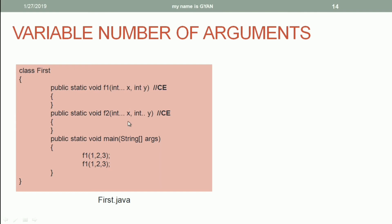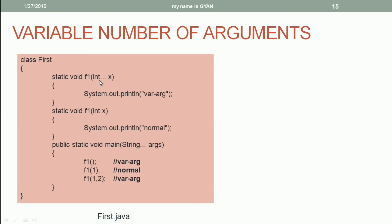We cannot have two variable number of arguments in a method, and a varargs cannot appear before any other argument — it must be the rightmost argument of the method. Here we are overloading f1: one definition has varargs and the other has a single integer variable. When you call f1 with no arguments, it calls the varargs version with an array of size 0. When you call f1 with one argument, the most suitable method is the one with a single integer, so 1 is copied into x and it prints 'normal'. When you call f1 with two integer arguments, it calls the varargs version and prints 'var arg'.